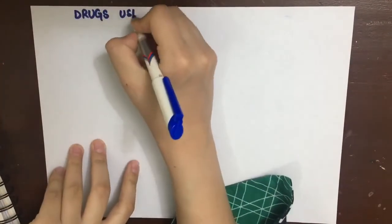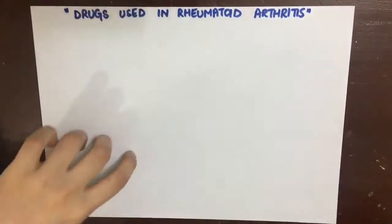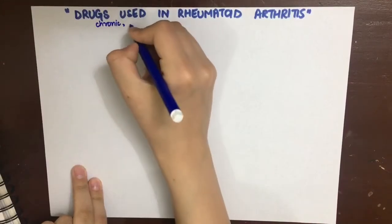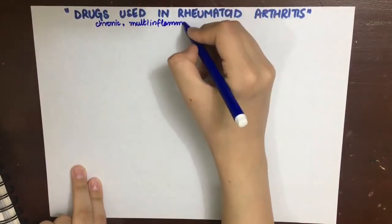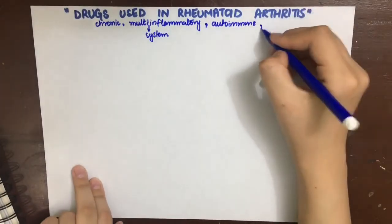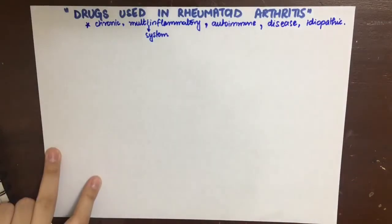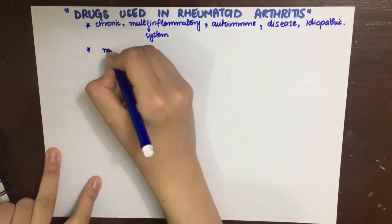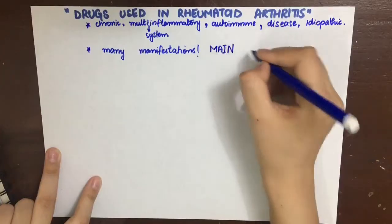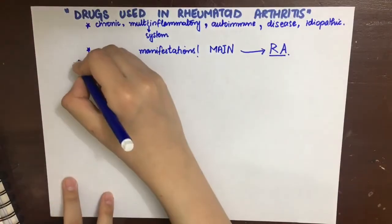We are looking at the drugs used in rheumatoid arthritis. Rheumatoid arthritis is basically a chronic multi-system inflammatory autoimmune disease with no known cause. It is mainly common in women of childbearing age. There are many manifestations of this autoimmune disease, but the main manifestation is rheumatoid arthritis, where there is persistent inflammatory synovitis of peripheral smaller joints.